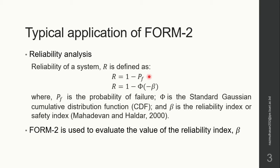Where PF is the probability of failure, Φ is the Standard Gaussian CDF, and β is called the reliability index or the safety index. The main application of FORM-2 is to evaluate the value of the reliability index for a system.